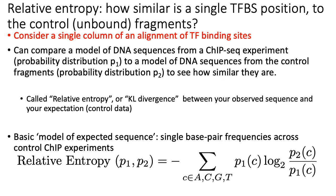Essentially, how informative is that position — how important is the base at that position — as measured by its difference from what an average column looks like in the control fragments. Keep in mind that for the purposes of these slides, when I talk about how often we see an A, C, G, or T at a given position, we're really talking about the set of bases in a single column of an alignment of TF binding sites.